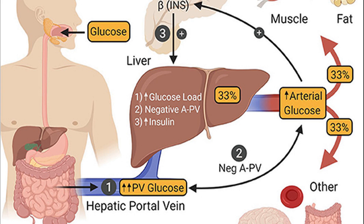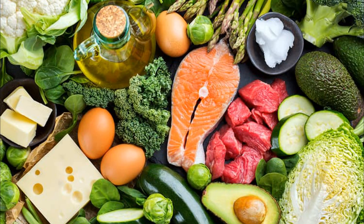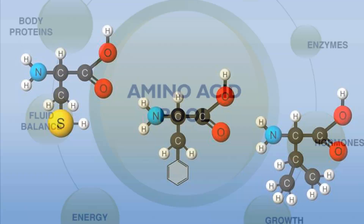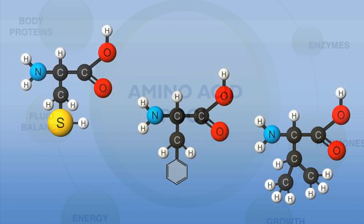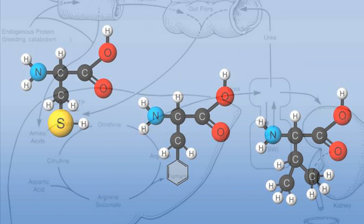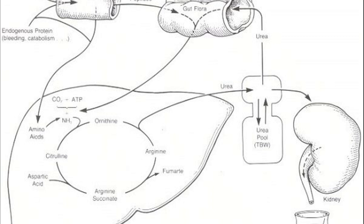Fats. Some of the fatty products of digestion that arrive in the liver are used to manufacture fatty substances like cholesterol. Amino acids. Amino acids are used to make new proteins. The liver produces a certain amount of surplus nitrogen which is rapidly converted to urea — the chief waste product formed. Some of the excess amino acids may also be converted into glucose.